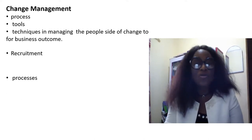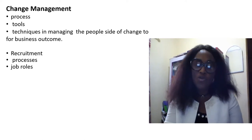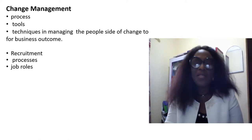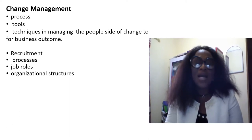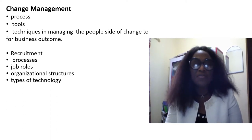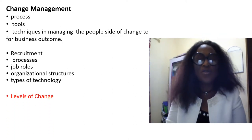It includes the area of recruitment, the processes of work, the job roles of the people that are recruited, and the job specifications. Because if they don't adapt and don't work well, the change will not occur. They have to adapt to the organizational structure itself and the types of technology being employed.